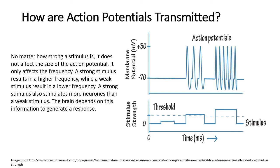When transmitting action potentials, no matter how strong the stimulus is, the action potential will always reach about plus 30 millivolts. So we start at resting potential of minus 70, rise to plus 30, and come back down to minus 70. If the stimulus is very strong, the action potential will not go beyond that — instead it will be more frequent. A weak stimulus produces action potentials that are more spaced out, while a strong stimulus produces a higher frequency of action potentials.